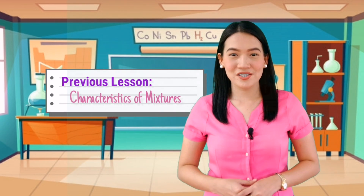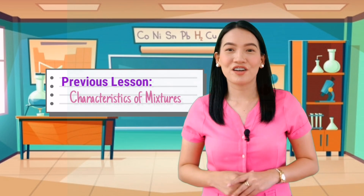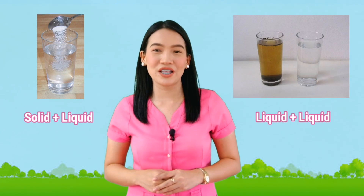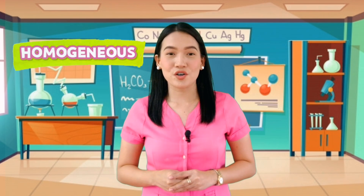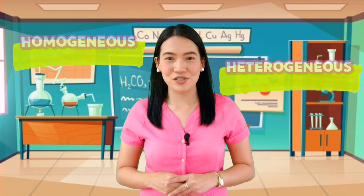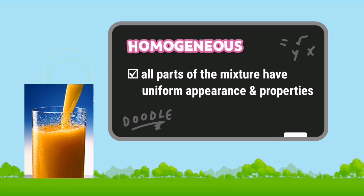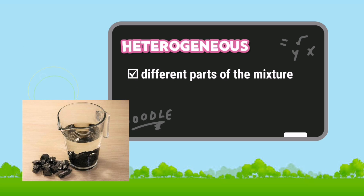In the previous lessons, you learned about mixtures and their characteristics. You have done activities where you mixed a solid and a liquid or combined two different liquids. In the process of mixing, you have observed that these mixtures either form homogeneous or heterogeneous mixtures. You have seen that when all parts of the mixture have the same uniform appearance and properties, it is homogeneous. You also learned that when different parts of the mixture can be identified, it is heterogeneous.